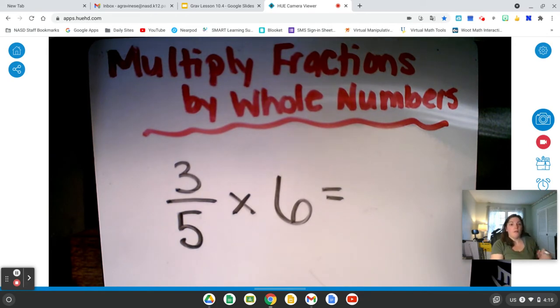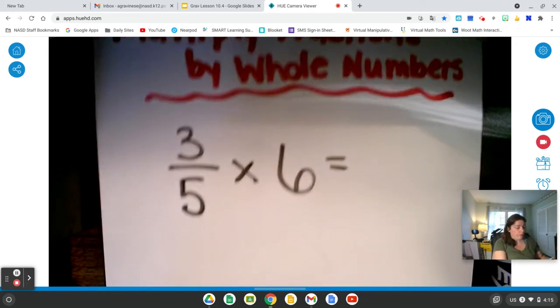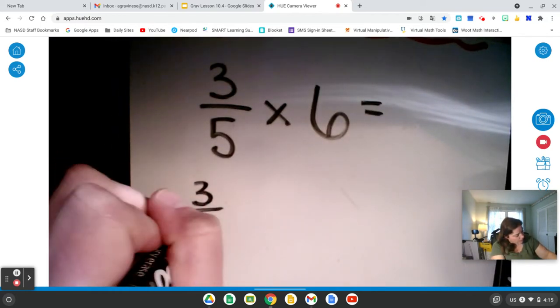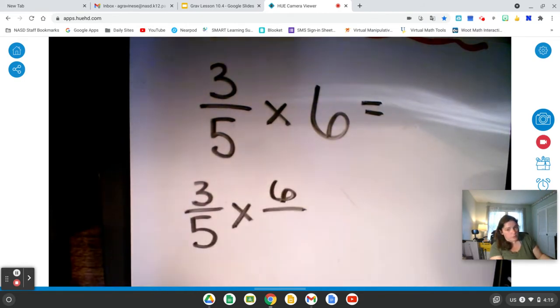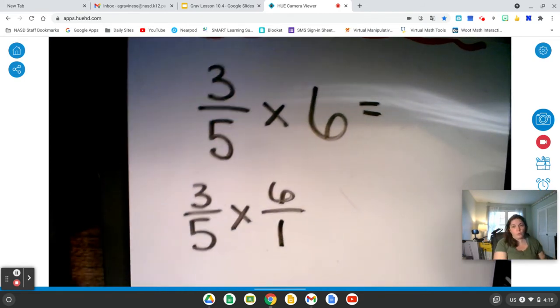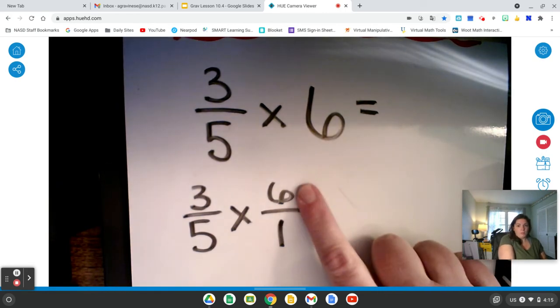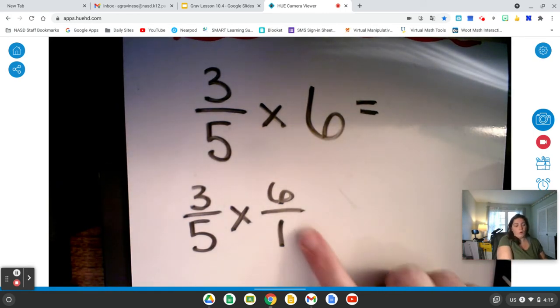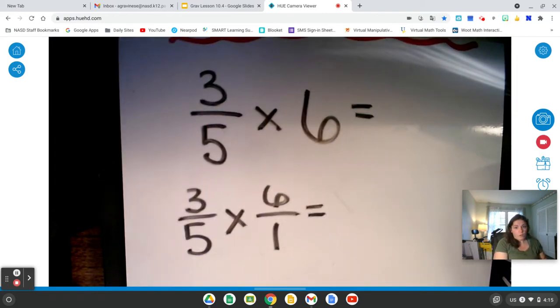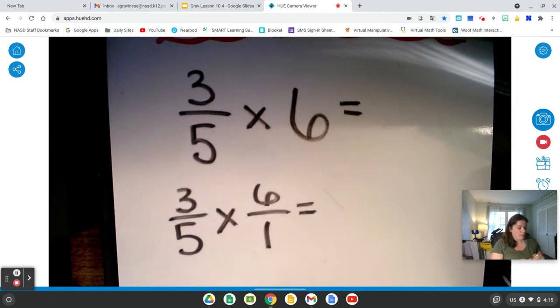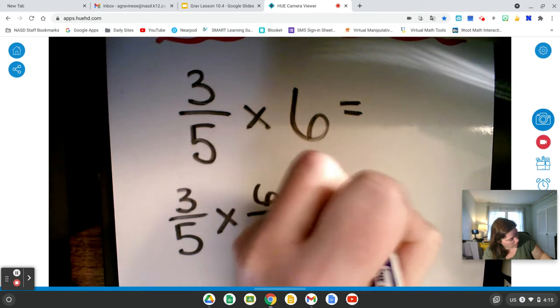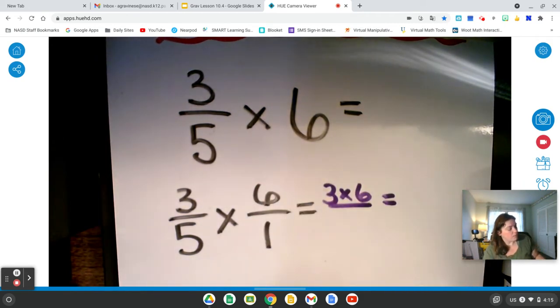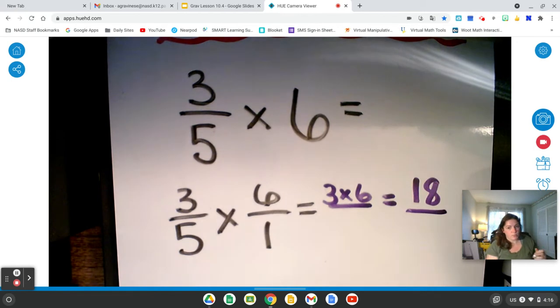3 fifths of 6, part of a whole. My very first step is to make my whole number look like a fraction. So I'll rewrite this. 3 fifths times 6 wholes is 6 over 1. So I took my whole number, kept it as my numerator, and then made a 1 for my denominator. Now I can multiply my two numerators. 3 times 6 equals 18.